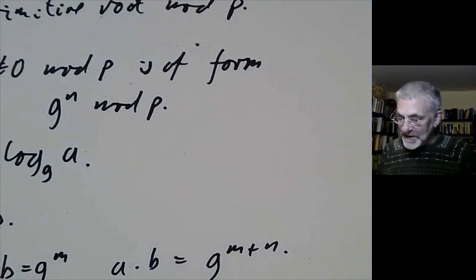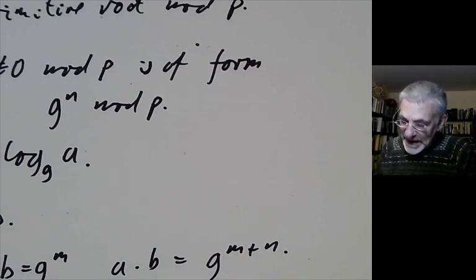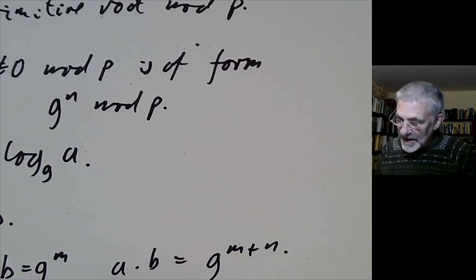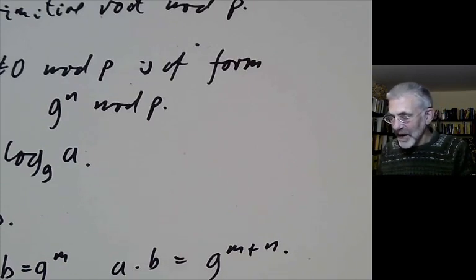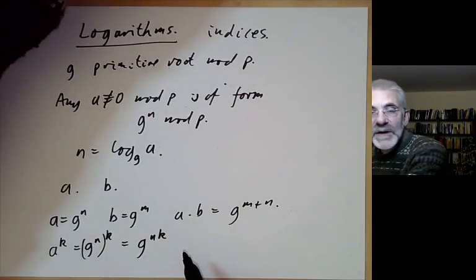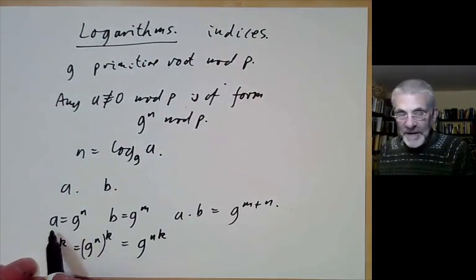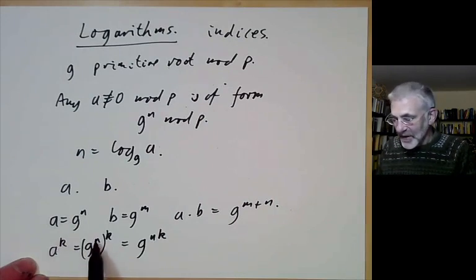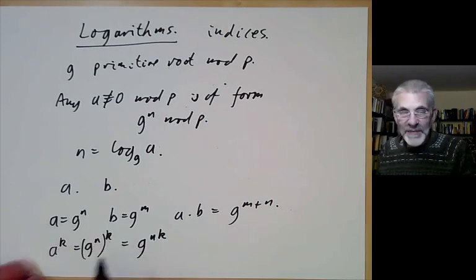You can also compute powers using indices. To work out a to the k, write a as g to the n, so a to the k equals g to the n to the k, which equals g to the n times k. You compute n, multiply by k, and then look up the result in your table of antilogarithms.